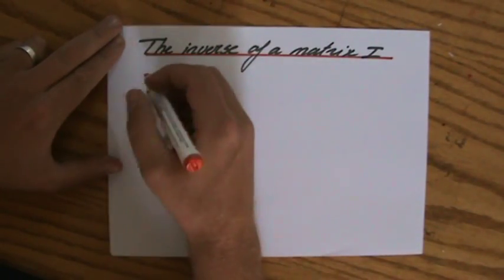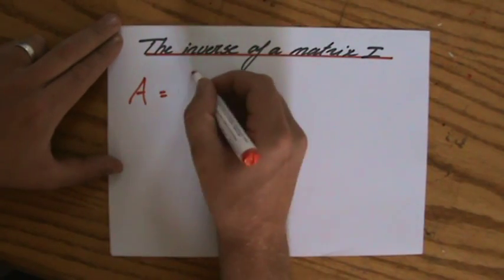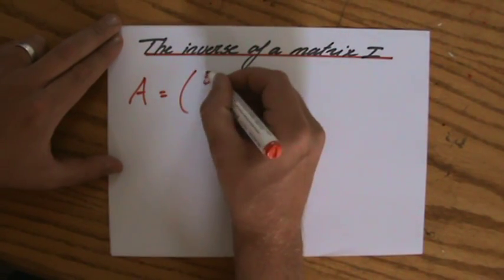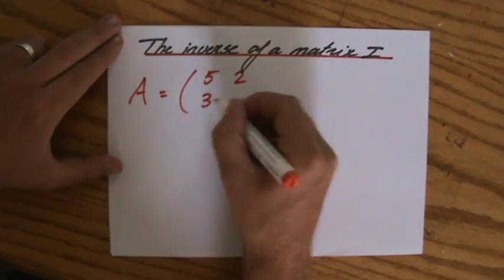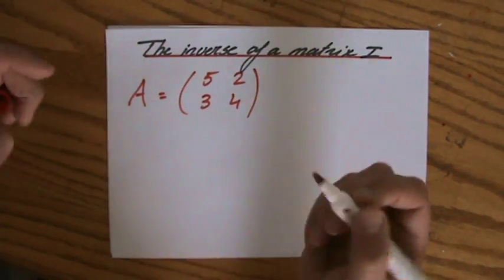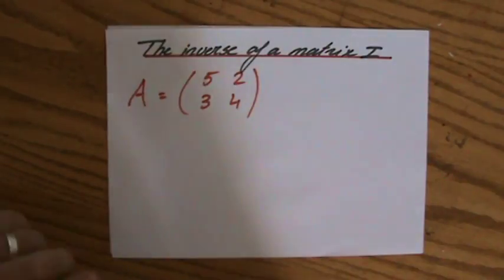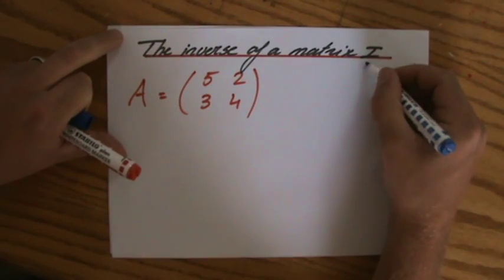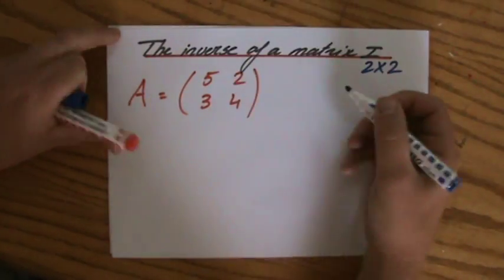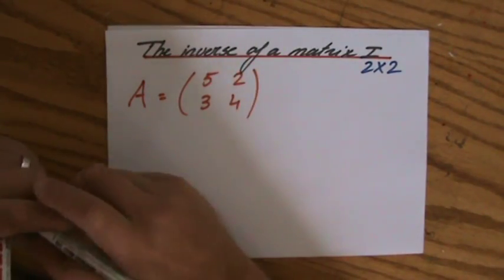So the inverse. Let's say I have a matrix A, any number 5, 2, 3 and 4. And you only have to find the inverse of a matrix for matrices of order 2 by 2. So that is nice.